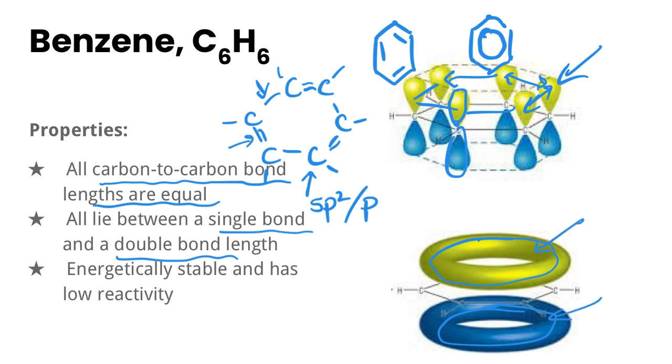So this is also said to have delocalized pi electrons and ends up resulting in this structure where all of the bonds lie between a single and a double bond length.